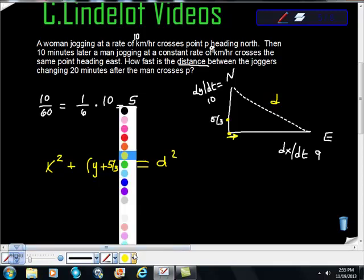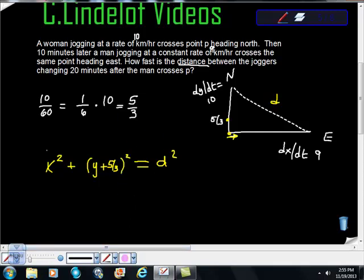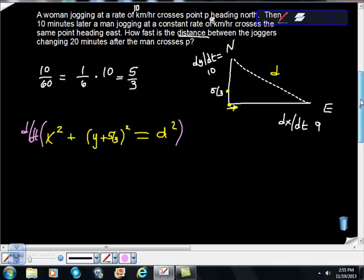Now, from here, it gets easier for a second, and then it gets crappy again. Always what we're going to do with related rates problems is that we're going to take d dt of the whole mess. So I found my equation.